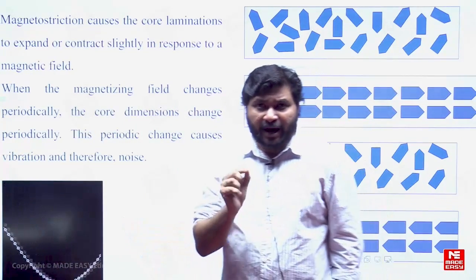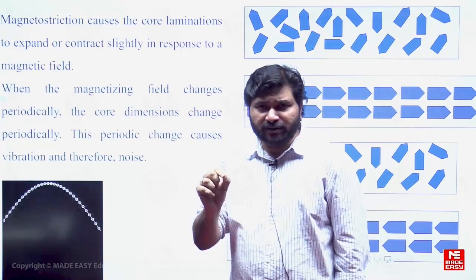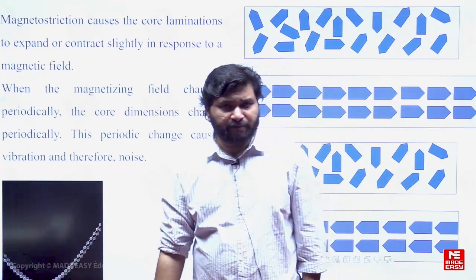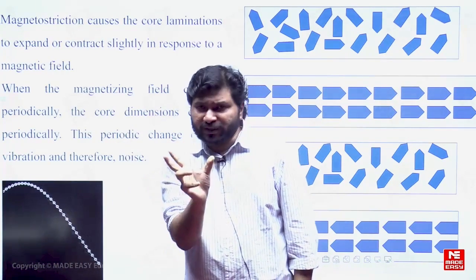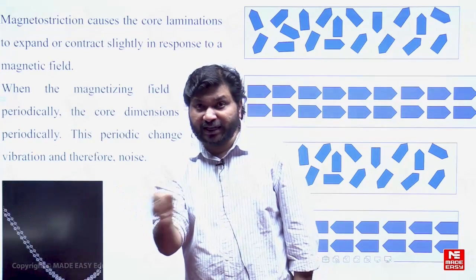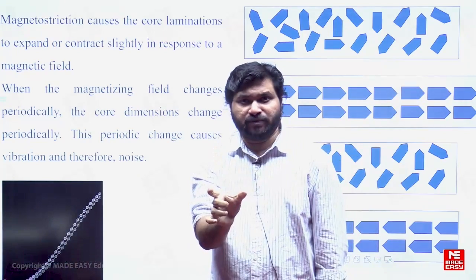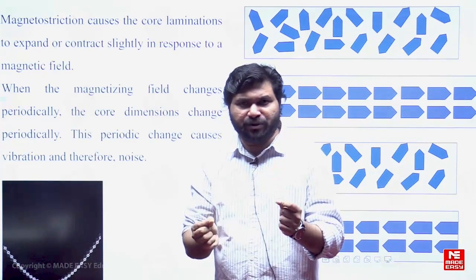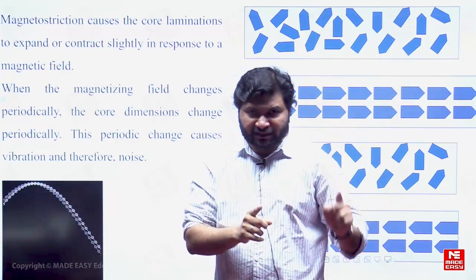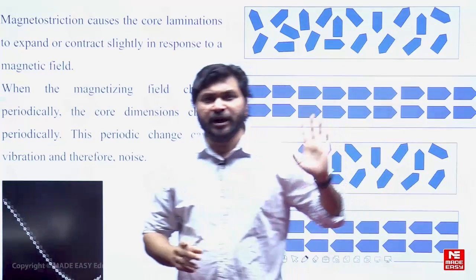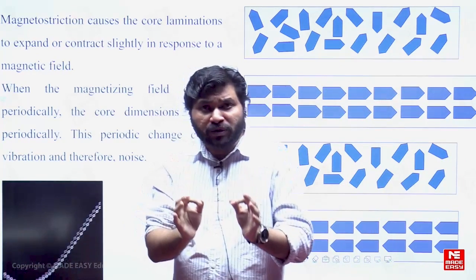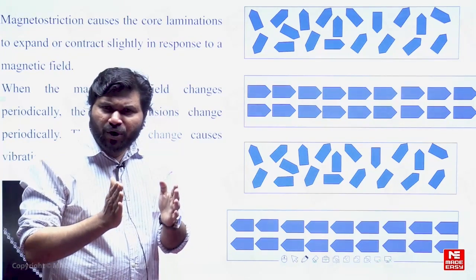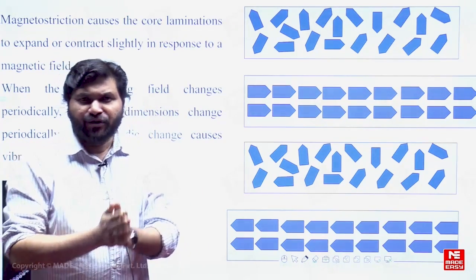When we supply alternating voltage across the primary winding of a transformer, the current drawn is alternating type. Alternating current produces alternating flux. Let us take Indian conditions — 50 Hz supply, meaning 50 cycles. A positive cycle and a negative cycle constitute one cycle. So 50 positive cycles and 50 negative cycles in one second. Means 100 zero-crossings. A single lamination sheet is subjected to zero magnetization, maximum magnetization, again zero, again negative magnetization, again maximum, again zero. Means in one second, 100 times the core tries to change its dimension. Continuous periodic changes in the laminations will create vibrations.